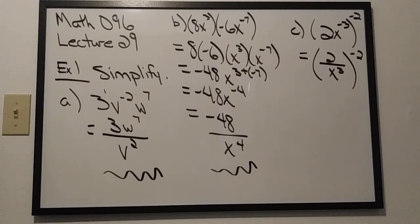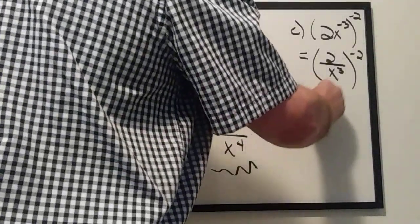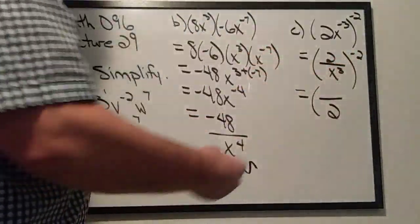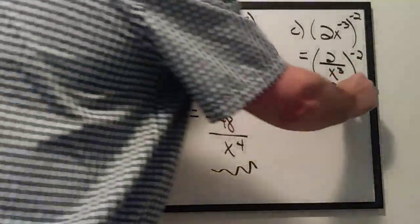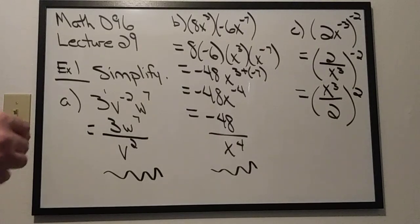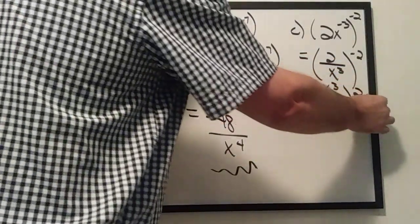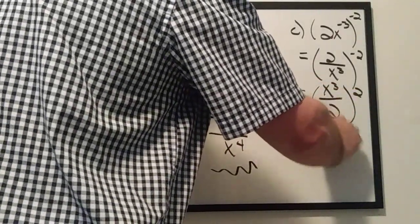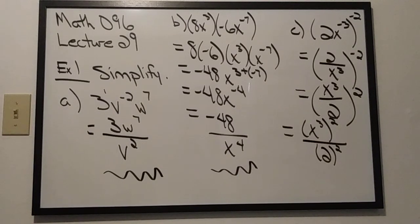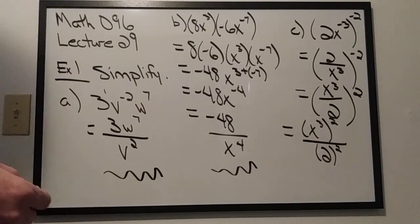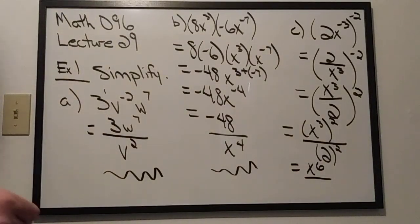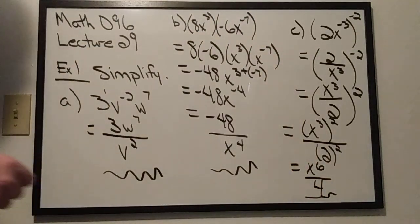A fraction to a negative power means I can take the entire fraction and flip it — negative exponents move things. So my 2 in the numerator becomes a 2 in the denominator, and x to the third in the denominator becomes x to the third in the numerator, with the negative 2 now becoming a positive 2 power. Then I have a fraction to a power, so I bring that power of 2 down to both numerator and denominator: x to the third squared divided by 2 squared. Using the power rule, 3 times 2 is 6, giving x to the sixth. And 2 squared is 4. So our final answer is x to the sixth divided by 4.